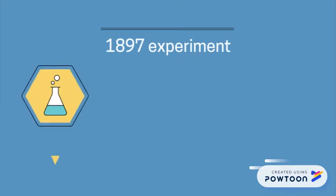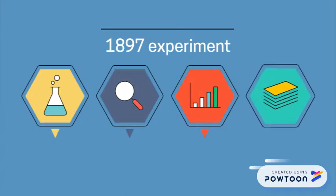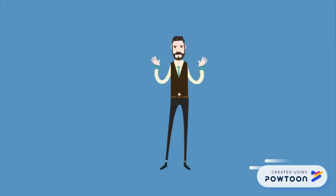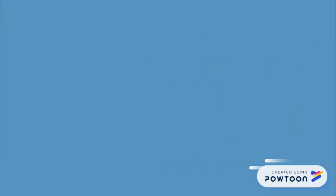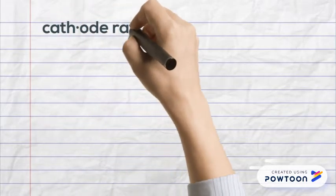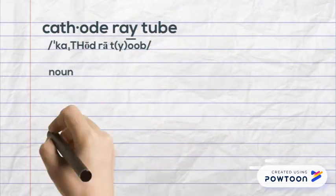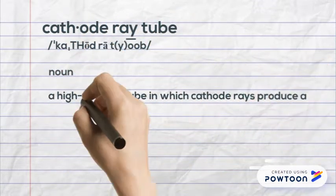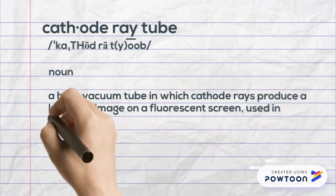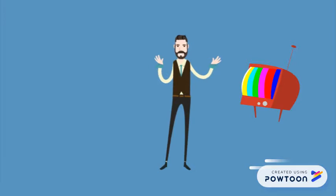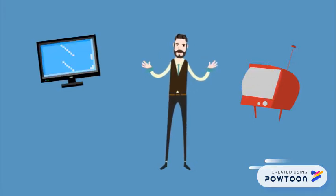In 1897, J.J. Thomson discovered the electron by experimenting with Crookes, or so-called cathode ray tubes. A cathode ray tube is a high vacuum tube in which cathode rays produce a luminous image on a fluorescent screen. It is usually used in televisions and computer terminals to display images.